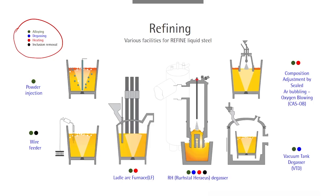In the middle of the slide, we see two types of facilities. The left one is called the ladle arc furnace, or simply LF. The LF furnace is used to reheat liquid steel using electrodes that cause an electric arc at the surface of the liquid steel, providing enough energy to increase temperature. By stirring with argon gas bubbles, liquid steel is well agitated and temperatures are evenly distributed.